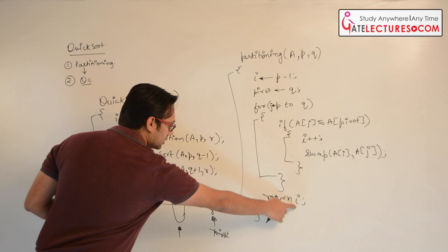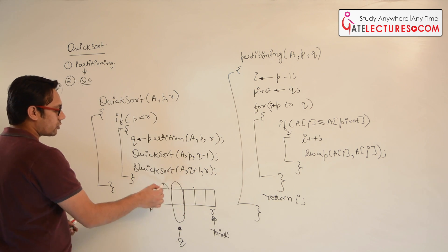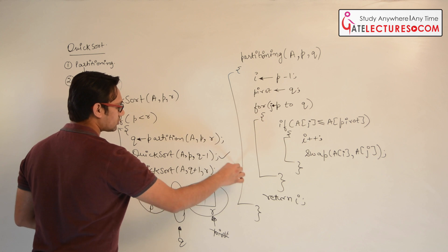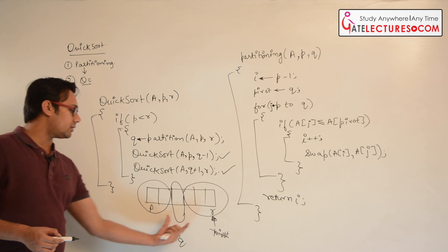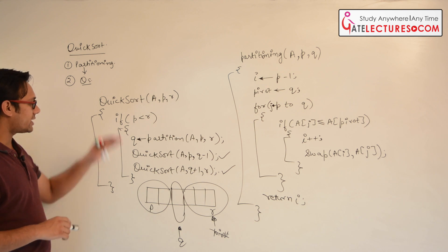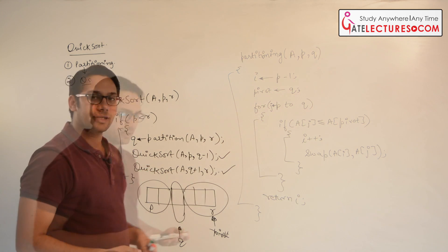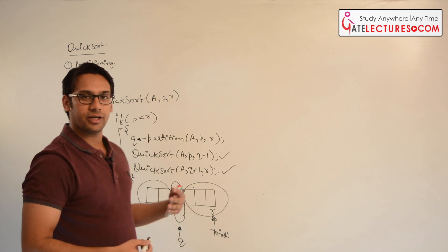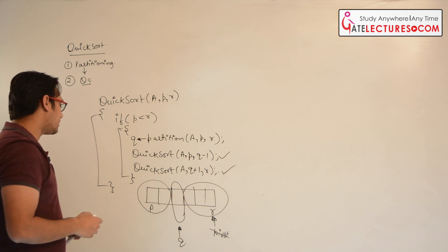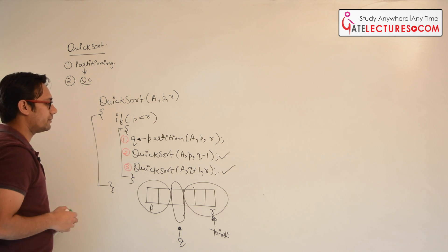The position where the pivot is swapped is returned as i, which gets stored in q. So q will be at that position, and again we call quick sort on the left part and quick sort on the right part, repeating the same procedure in both halves. To understand this, let us make a recursive tree showing all the recursive calls. I will number the lines: this is line 1, this is line 2, and this is line 3.